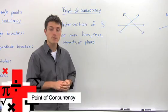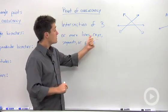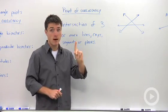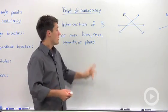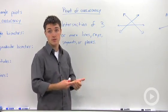A point of concurrency is a place where three or more—but at least three—lines, rays, segments, or planes intersect in one spot. If they do, then those lines or rays are considered concurrent.